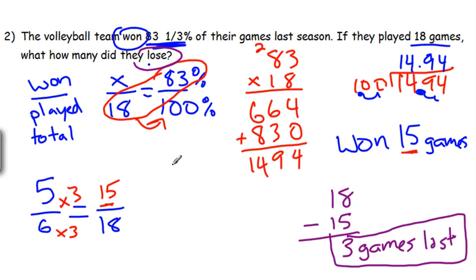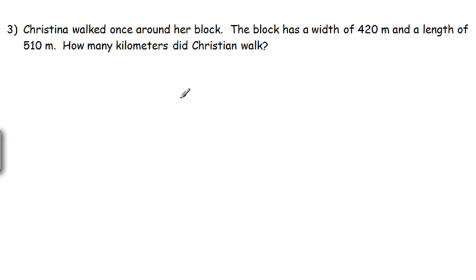Number three: Christina walked once around her block. Her block had a width of 420 meters and a length of 510 meters. How many kilometers did Christina walk? Oh, suddenly we have different names—that's a typo. Christina, Christian... Bobby. Yeah, I didn't want to decide, so now their name is Bobby. So Bobby walks around the block and we want to know how many kilometers. Let's draw the block.